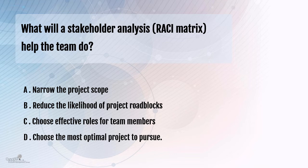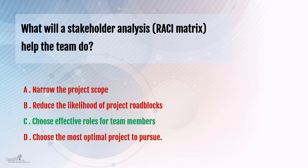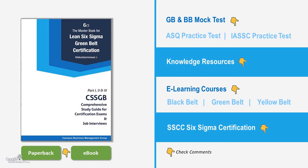RACI defines what role each person is supposed to play — who is supposed to approve in the project, who is responsible for the deliverables, who should be consulted, who is the subject matter expert, and so on. So C is the answer. But B is also a possible outcome or benefit of the stakeholder analysis — reducing the likelihood of project roadblocks — because with the right people playing the right roles, the project is expected to go more smoothly and face fewer roadblocks.